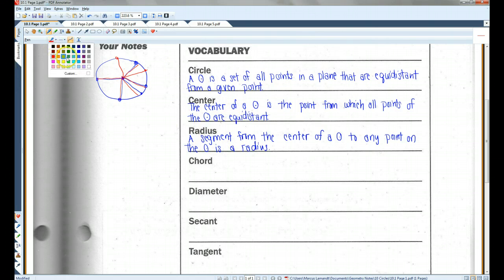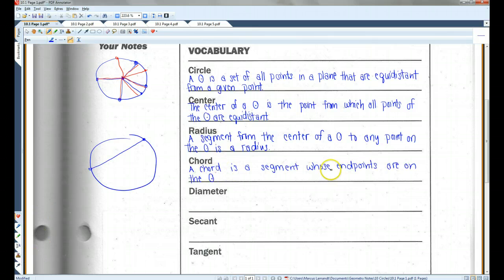Now, a chord is a little bit different. A chord is a segment whose endpoints are on the circle. So, for example, this would be a chord. It doesn't necessarily go through the center. It could just be off to the side somewhere. Here's another chord.